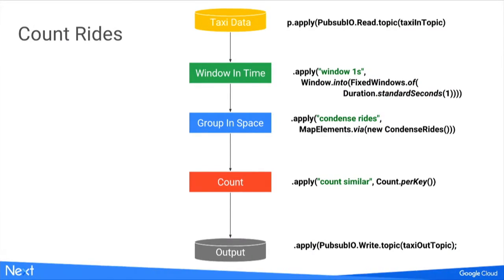We've described a set of logical transformations that take us from raw taxi telemetry to something much more condensed in volume, but still carrying sufficient information to be correct for our visualization. In the Dataflow code, notice that every line corresponds exactly to a logical transformation. Also notably absent from this code are things like setting up clusters, spinning up virtual machines, deploying resources, and recovering from crashes — all handled for you by Dataflow.